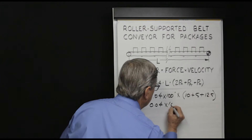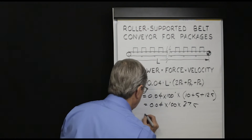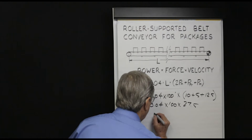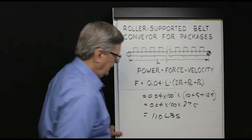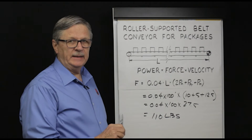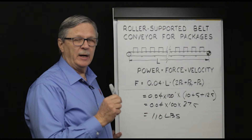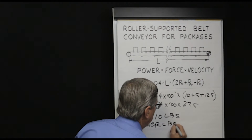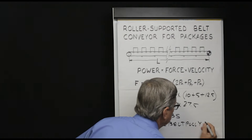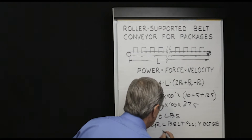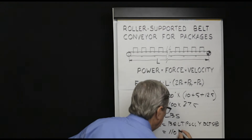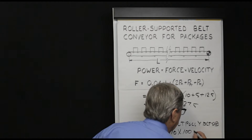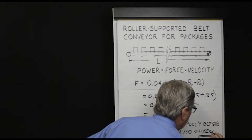Using roller bearing friction of 0.04, a conveyor length of 100 feet, and a total weight on the rollers equal to 10 pounds per foot of belt, 5 pounds per foot of rolling stock, and 12.5 pounds per foot of product: 0.04 times 100 times 27.5 yields a required belt pull of 110 pounds. Since belt speed is 100 feet per minute, we can calculate required power. The result is 110 pounds times 100 feet per minute, yielding 11,000 foot-pounds per minute.